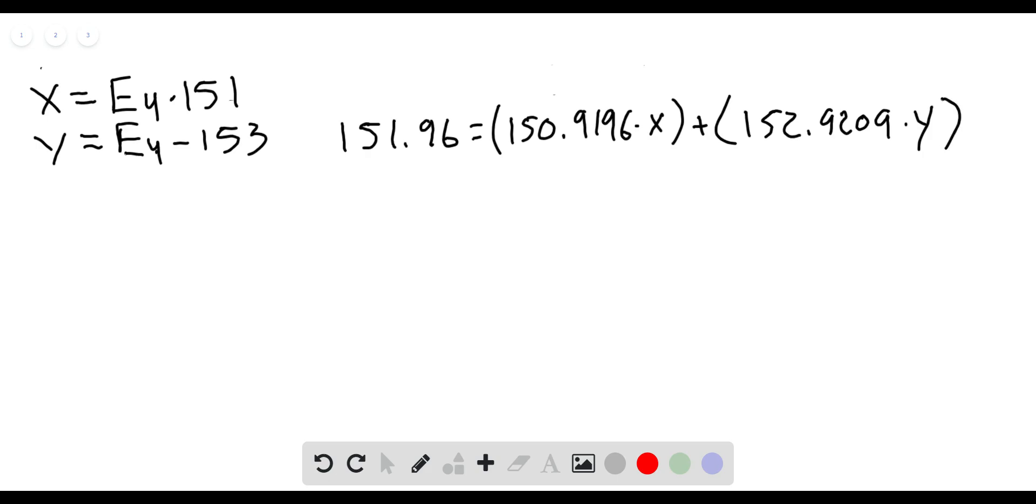In this problem we're trying to figure out the percent abundance of these two different isotopes of europium: Eu-151 and Eu-153. One of the challenges is because they're going to be different percentages, we're going to have to represent those as different values. So I've chosen x and y: x to represent the 151 and y to represent the 153.